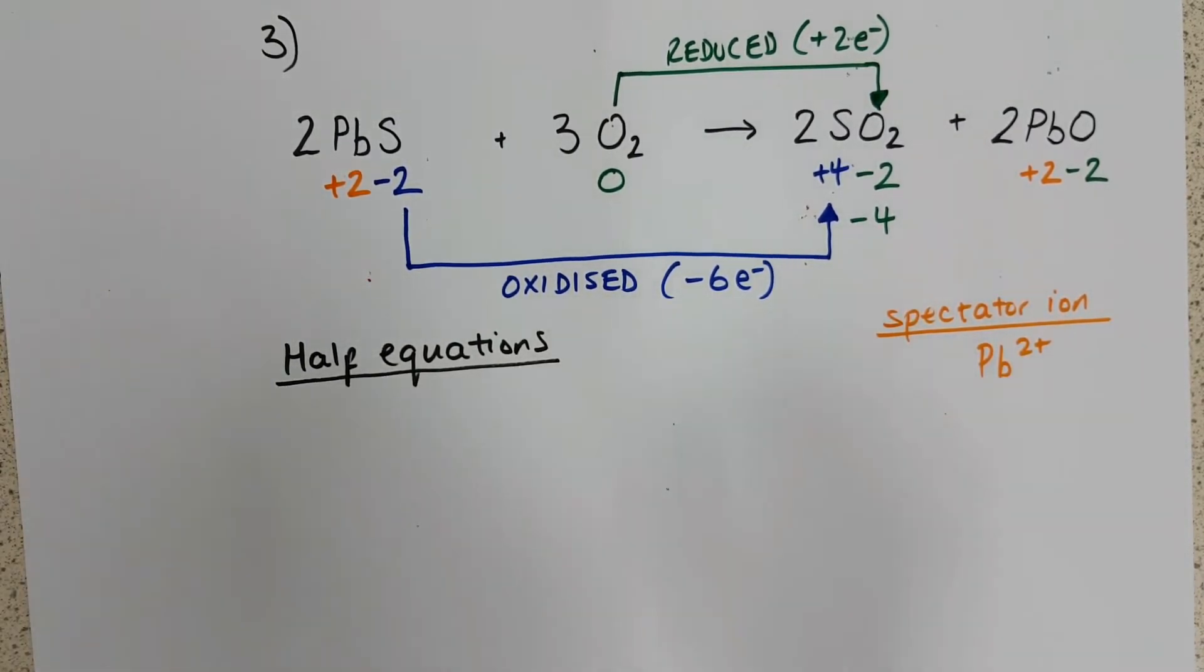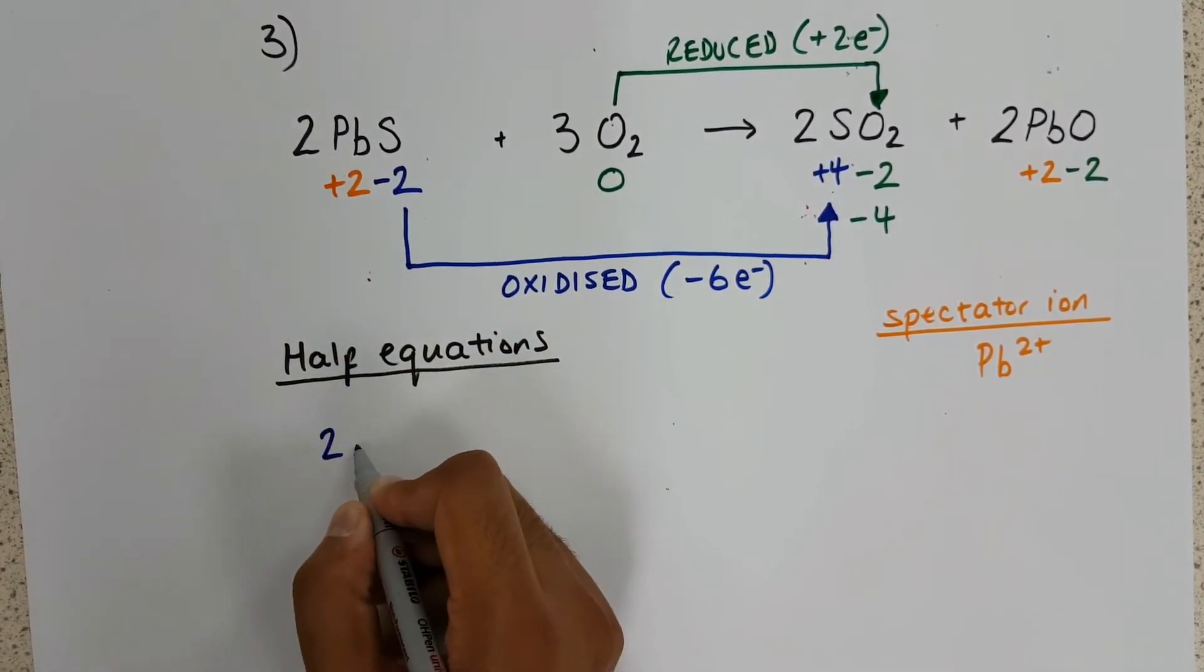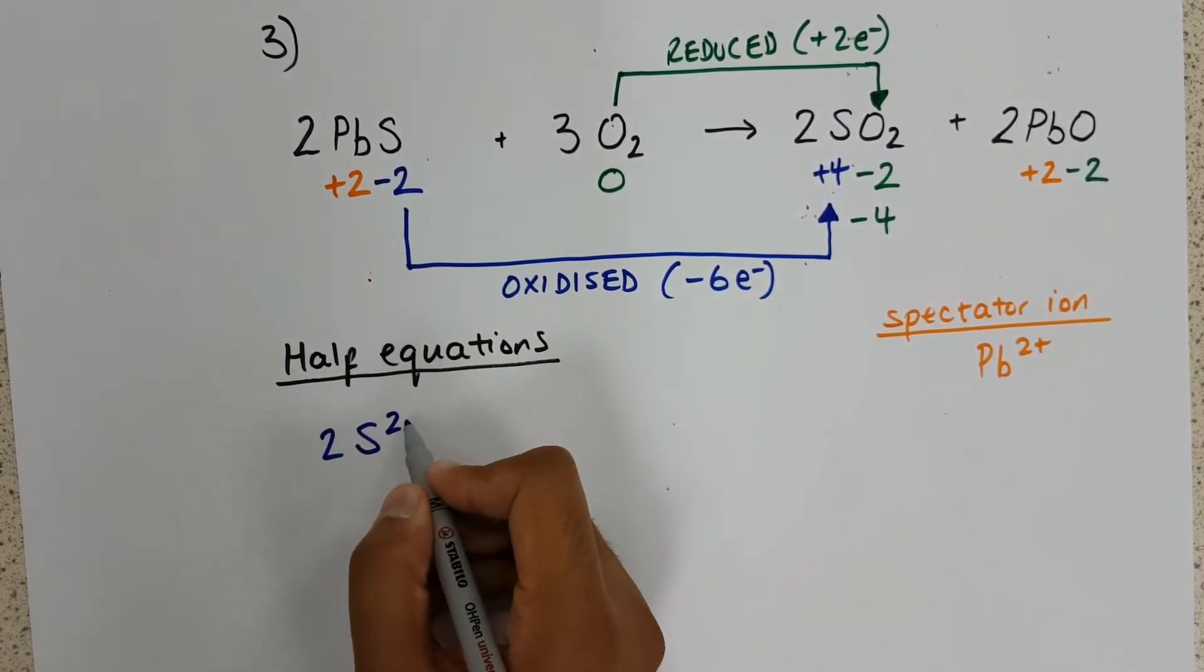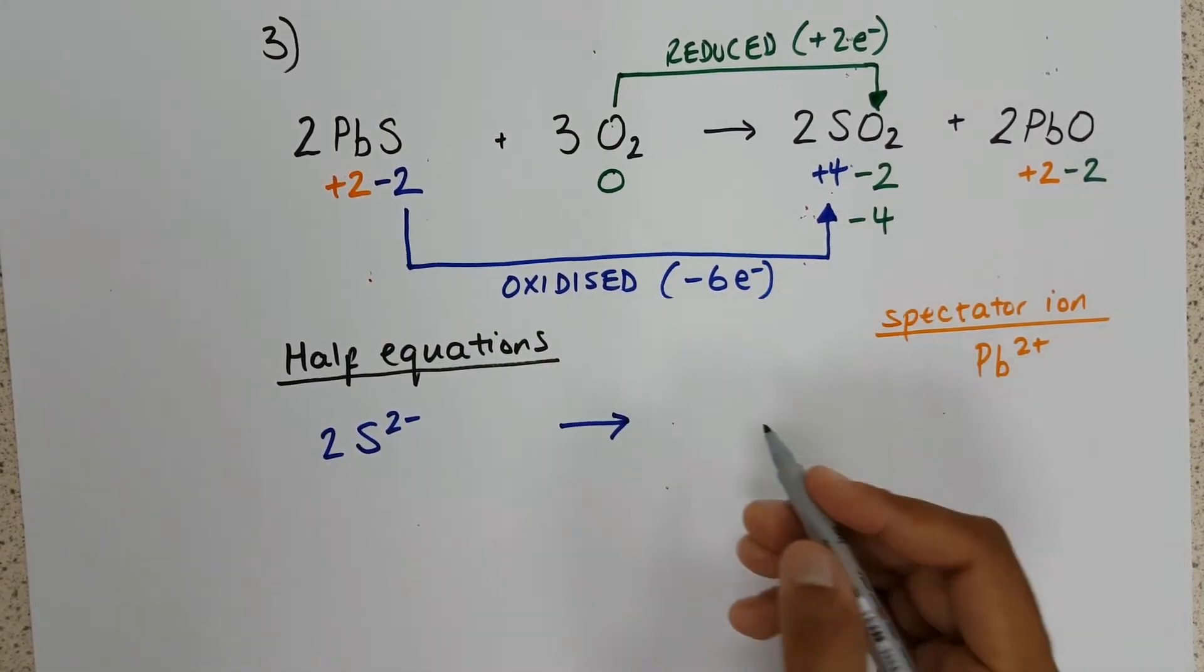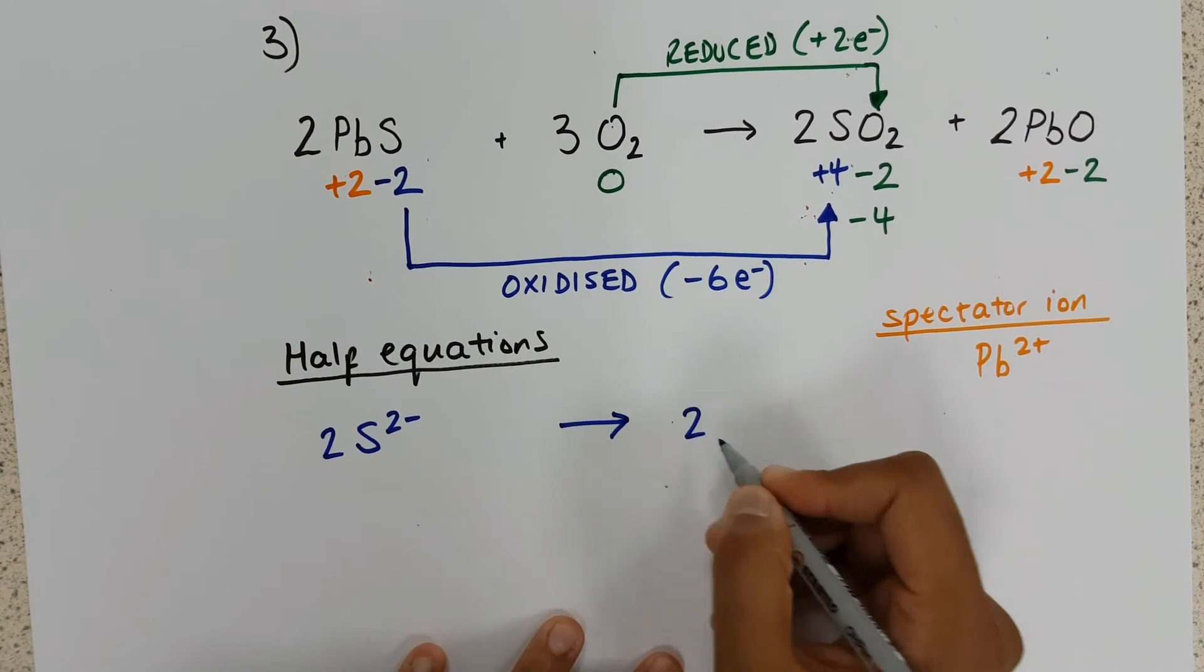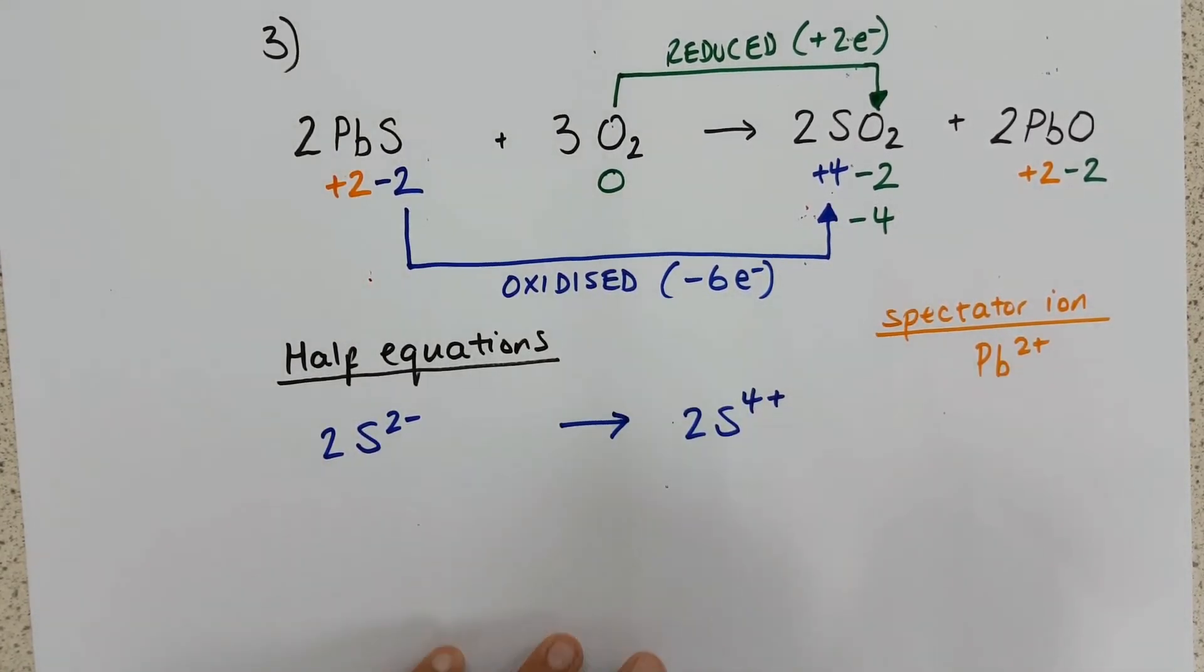If we start with sulphur, we have two sulphurs altogether, and each one has a charge of two minus. On the other side, we have two sulphur species again, but this time, the charge is four plus.